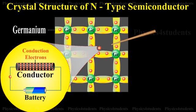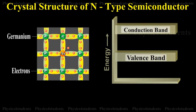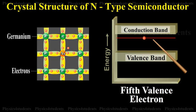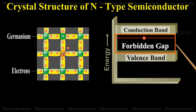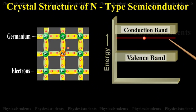In the energy band picture, the energy state corresponding to the fifth valence electron is in the forbidden gap and lies slightly below the conduction band. This level is known as the donor level. When the fifth valence electron is transferred to the conduction band, the arsenic atom becomes a positively charged immobile ion.